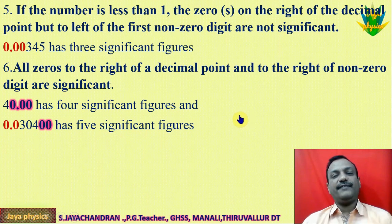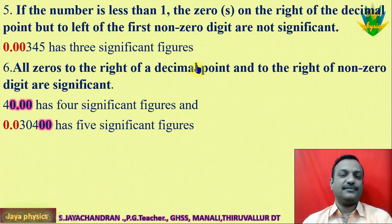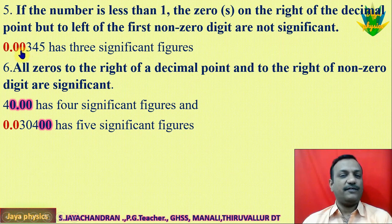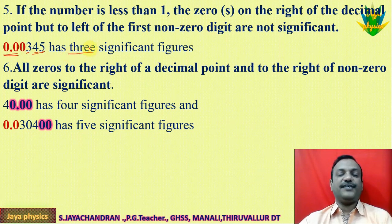Next case: if a number is less than one and has a decimal point, the zeroes on the left side of the decimal and immediately after the decimal point — before the first non-zero digit — are meaningless. They are not significant. For example, in 0.00something, what are the significant digits? One, two, three — three digits are significant. Significant figure is 3.